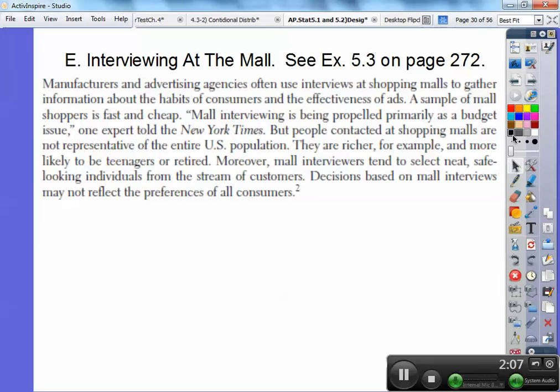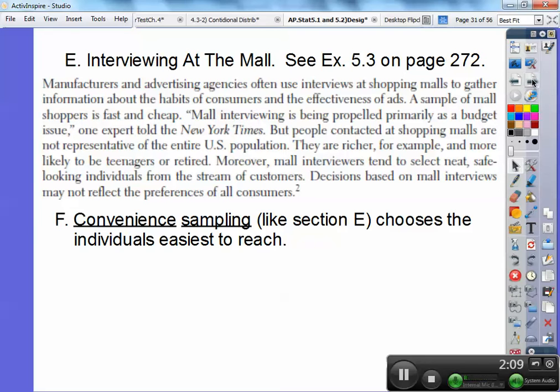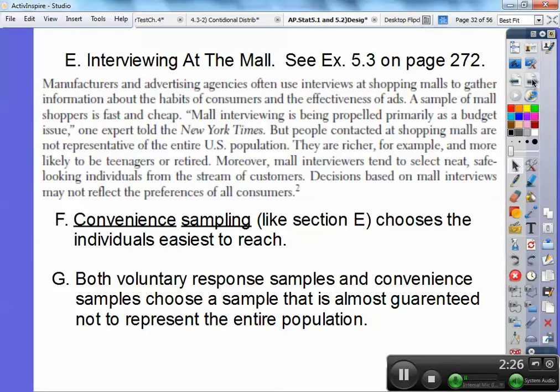So, let me continue here. This is called convenience sampling and it chooses individuals the easiest way to reach them. Malls are a good convenient way to get a bad sample actually, but it's nice and convenient. So, both voluntary response samples like the call-in things and convenience sampling choose a sample that is almost guaranteed not to represent the entire population.